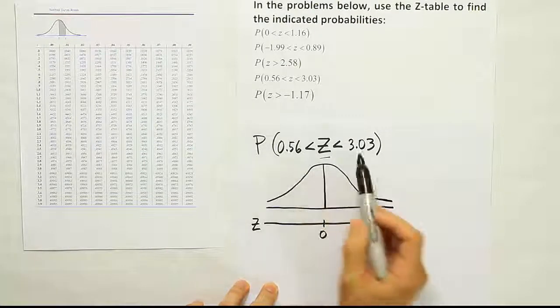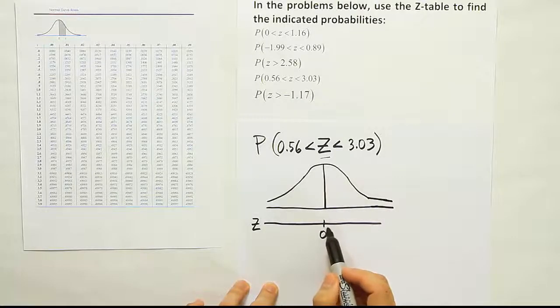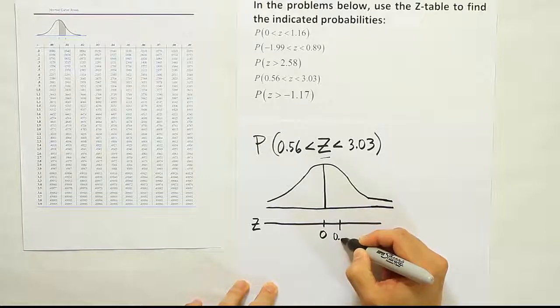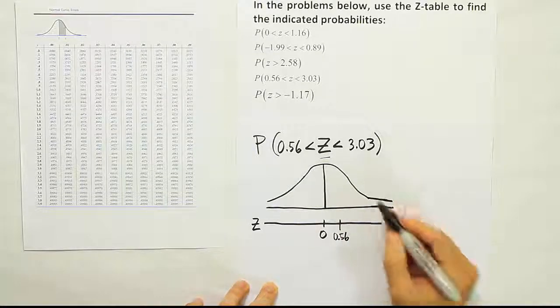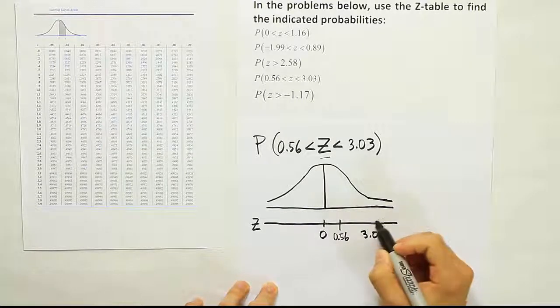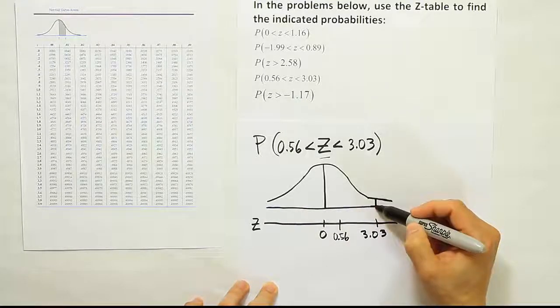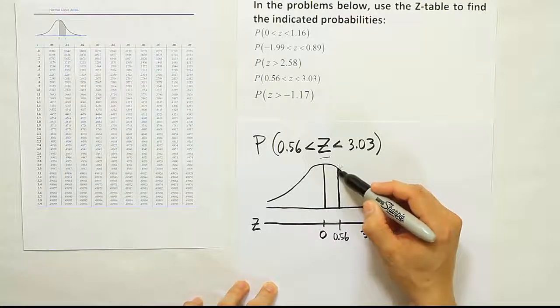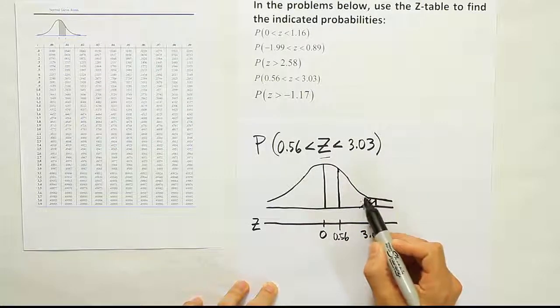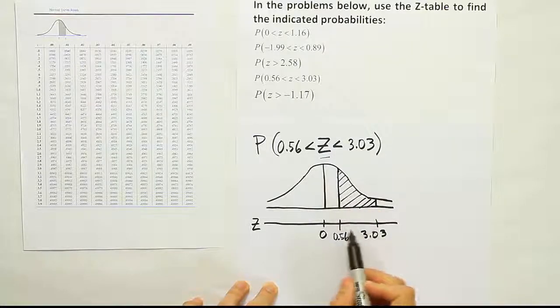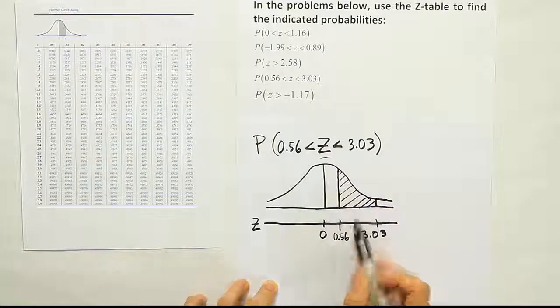Then, put these two numbers on the curve in the relative locations where they would belong. Since they're positive, they'll be on the right. So we'll do 0.56 for the first one, and 3.03 would be further to the right. So I'll draw a little line on my curve indicating where those are happening, and I shade the area that I'm looking for. Since it's talking about Z being between these two values, I'll shade between those two numbers on the curve.